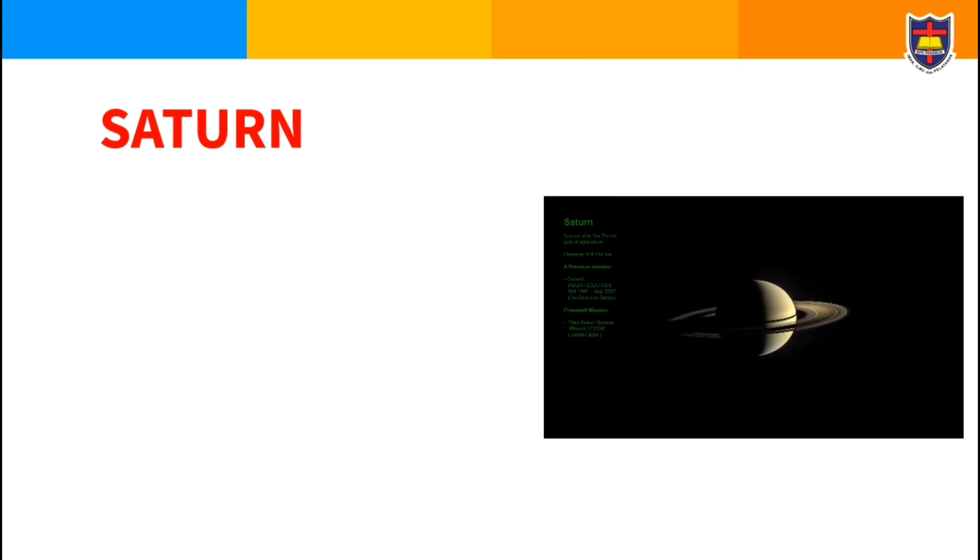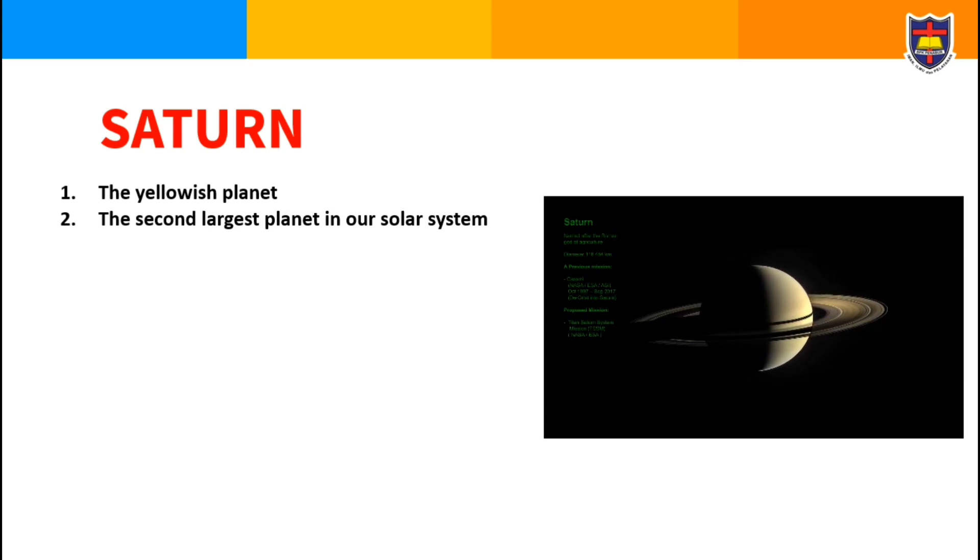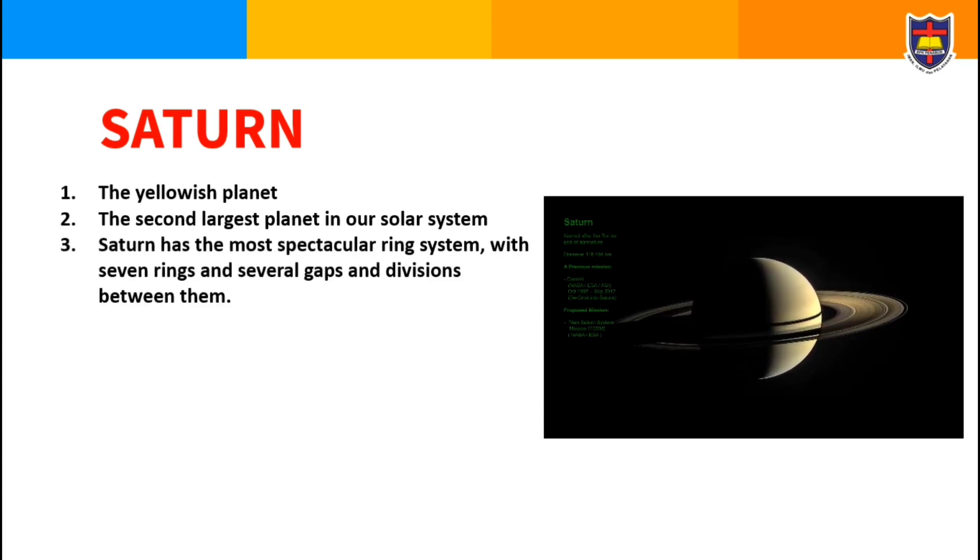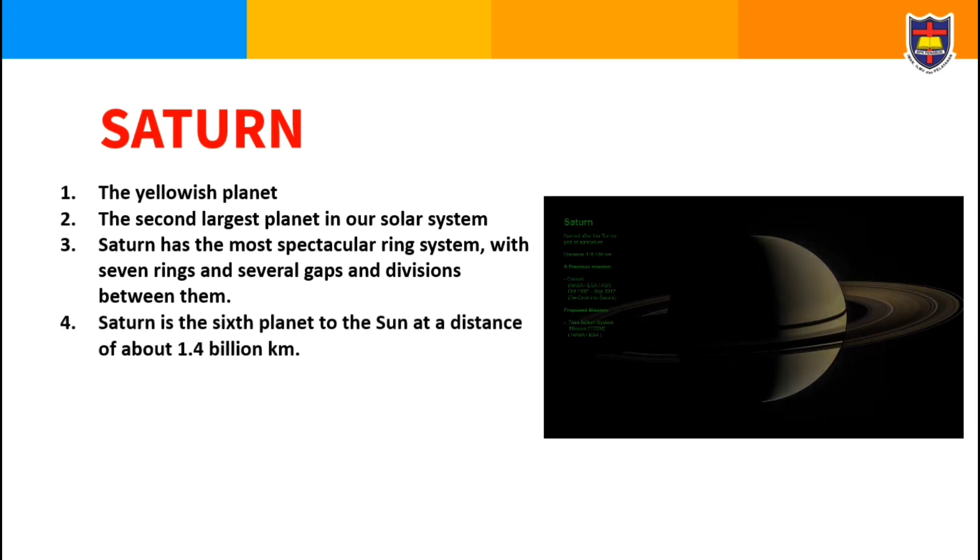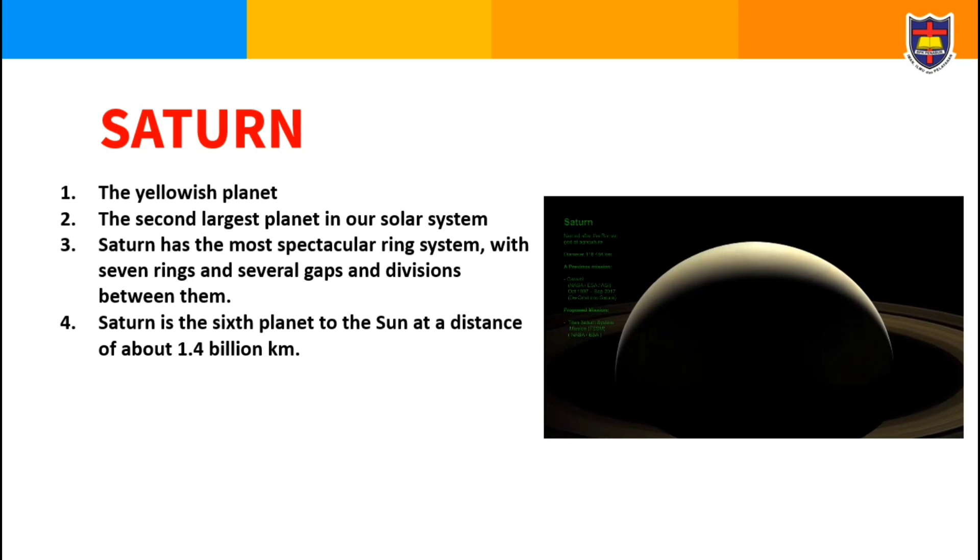The second largest planet in our solar system, Saturn, has the most spectacular ring system with seven rings and several gaps and divisions between them. Saturn is the sixth planet to the Sun at a distance of about 1.4 billion kilometers.